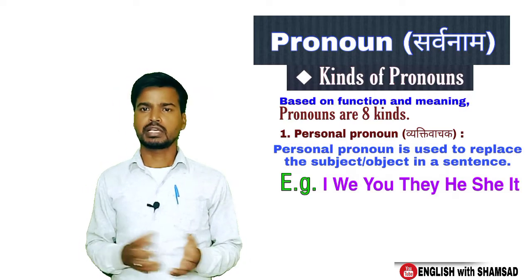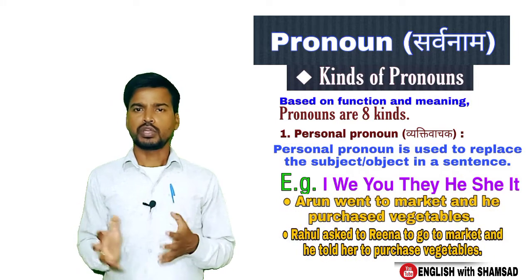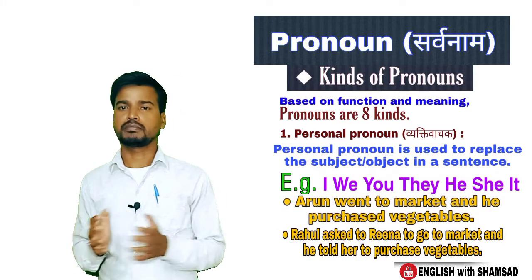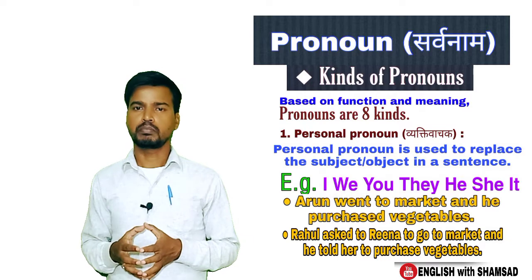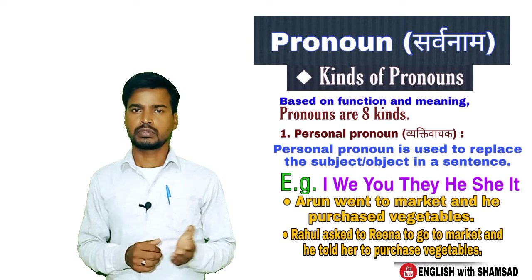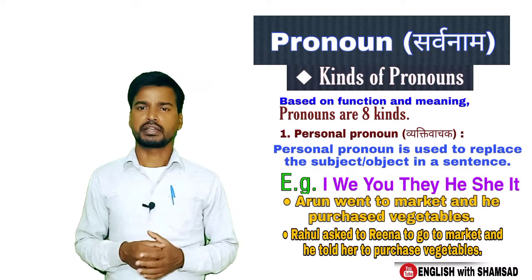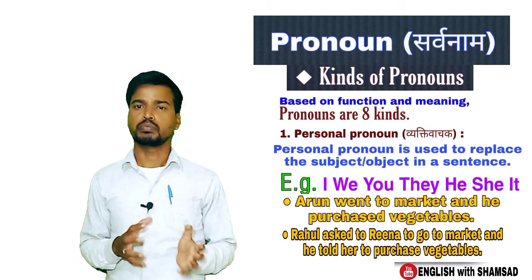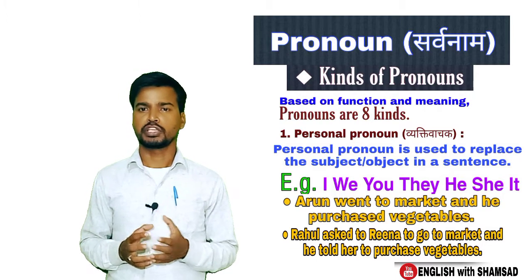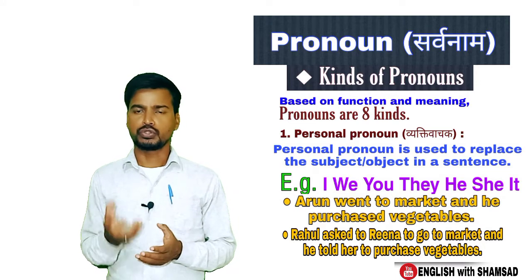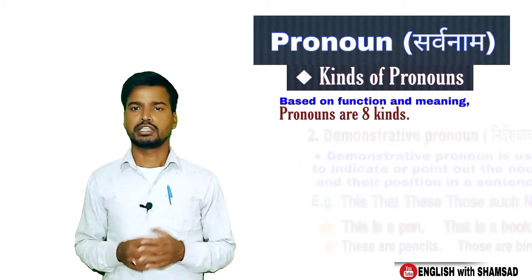For example in a sentence: 'Ram went to the market and he purchased vegetables' — here 'he' replaces Ram. Another example: 'Rahul asked Reena to go to the market and he told her to purchase vegetables.' Here Rahul and Reena are nouns, but in place of Rahul and Reena, we use the personal pronouns 'he' and 'she'.